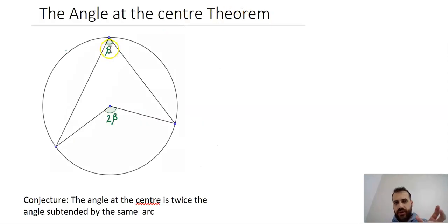What we're proving is that if this is angle beta, this must be angle 2 beta - it must be twice as large. The formal statement is: the angle at the center is twice the angle subtended by the same arc.